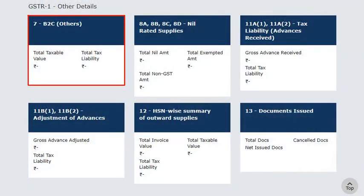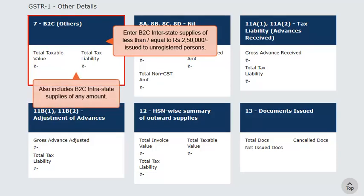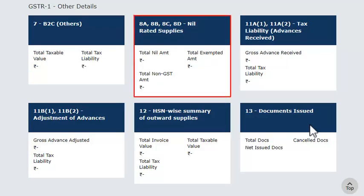In the B2C Others category, you can enter the summary details of B2C interstate invoices with a value of less than or equal to Rs. 250,000 per invoice issued to unregistered persons. Additionally, this category also includes B2C invoices raised against all intrastate supplies irrespective of the invoice amount. However, this category requires summary level information to be furnished, such as details as per place of supply and tax rates, which includes supplies made via e-commerce portals as well.